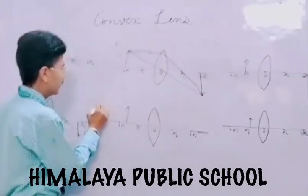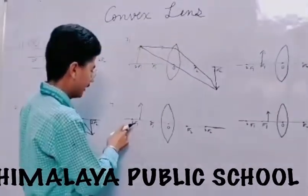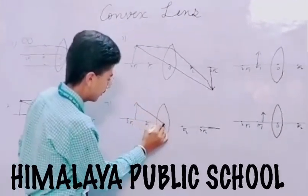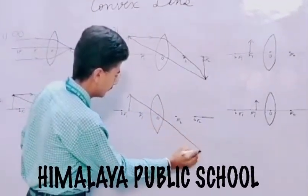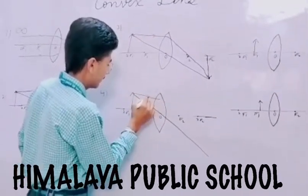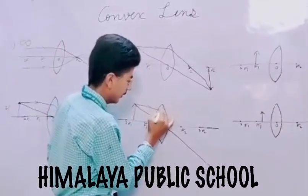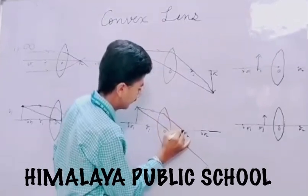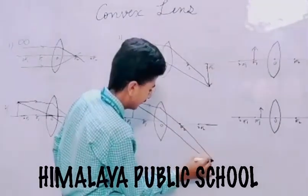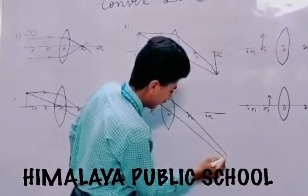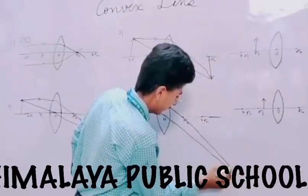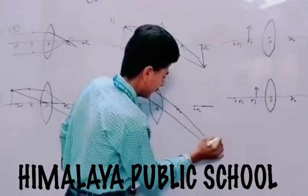Fourth condition is when the object is placed between the second focus and the first focus. The first ray is passing through the optical center and the second ray is coming parallel to the principal axis and will pass through the focus. Extending both rays, we will get that the image is formed beyond the second focus.